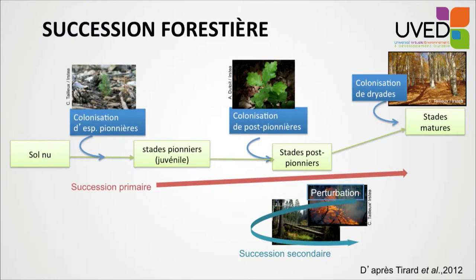So pioneer colonization will continue until shade-requiring colonization takes place, the seeds of which need shade to develop. At any stage, there can be something that upsets the process, and the process will go backwards to an intermediate stage. This can be a fire, or a storm, or something of anthropic origin — for instance, trees being cut down by man.